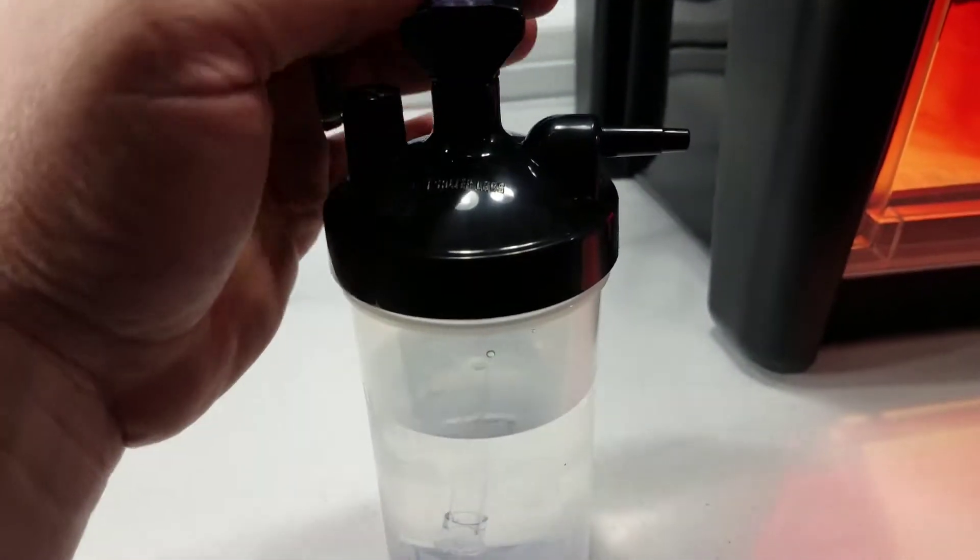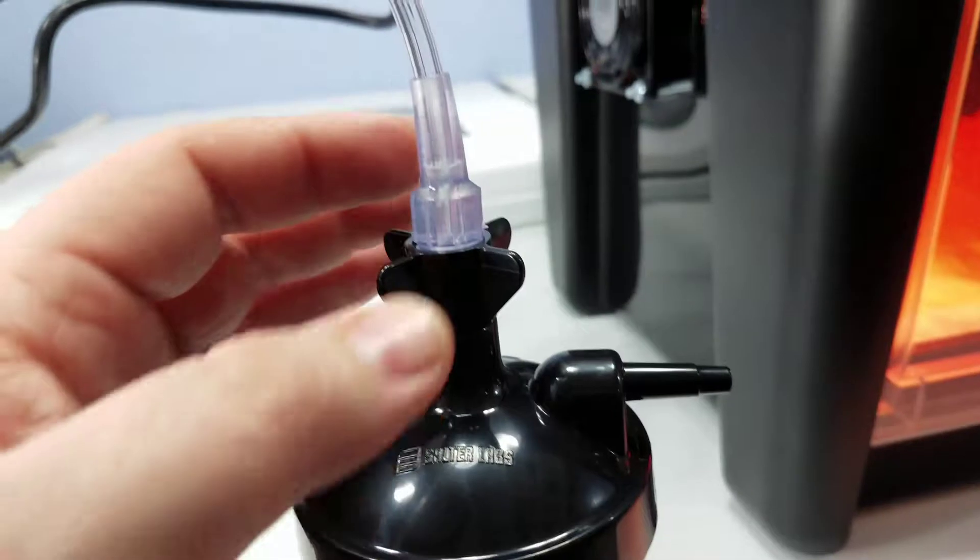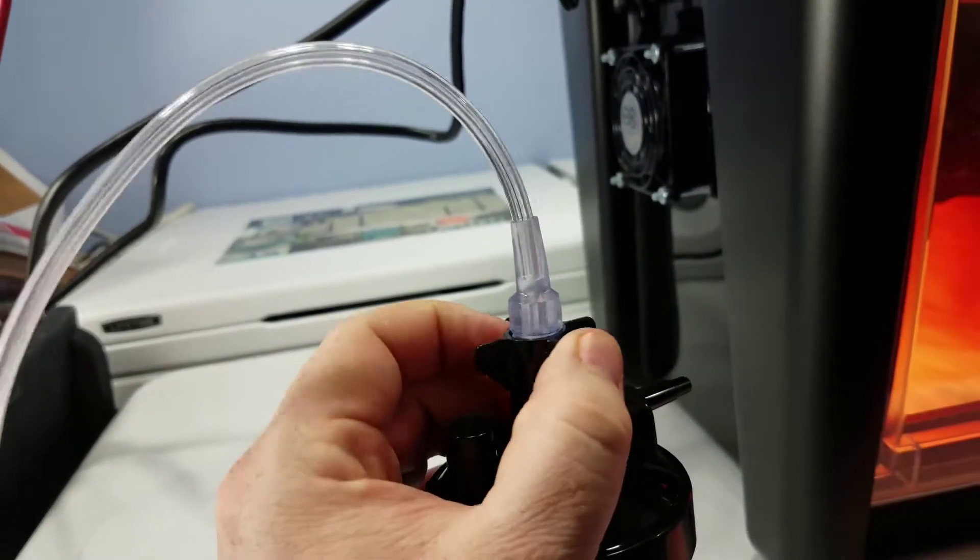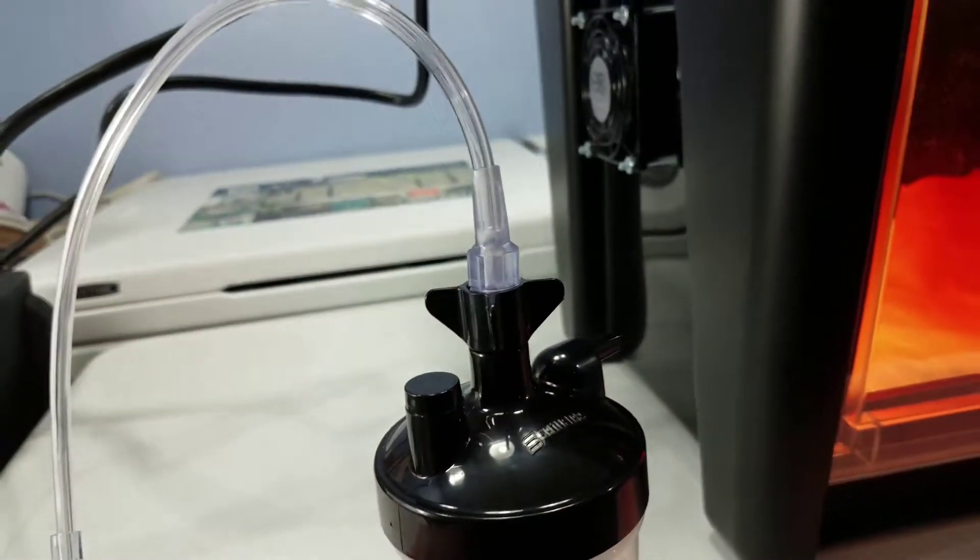Once you've got that snugged up, what you want to do is thread this into the top, that short connector. It just threads in until this goes snug and then we're gonna be ready to hook it up to the concentrator.